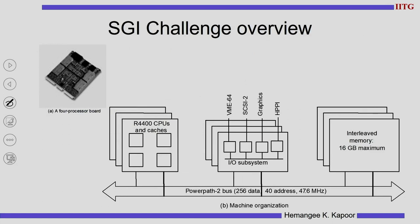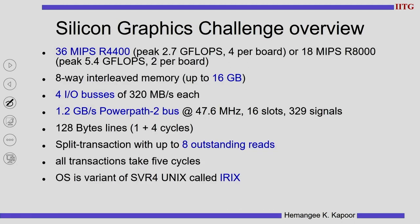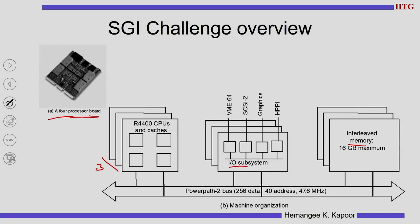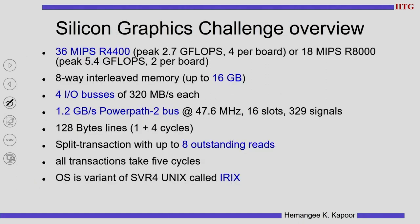I have shown three boards. They are all connected to the PowerPath bus, then connected to the memory and the IO subsystem. Every board has four processors and overall this system has 36 R4400 MIPS processors. Their performance is 2.7 giga-flops. It uses a 16 GB interleaved memory and there are four IO buses.